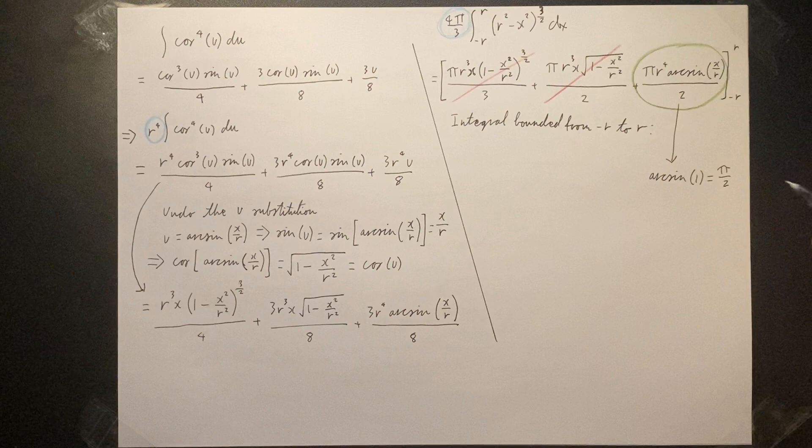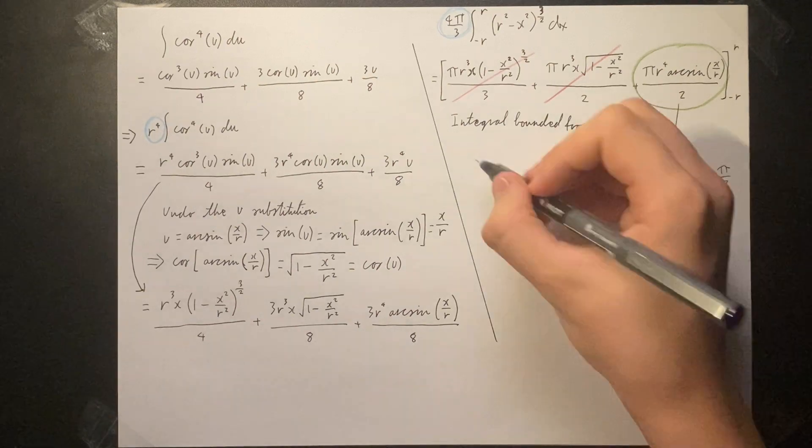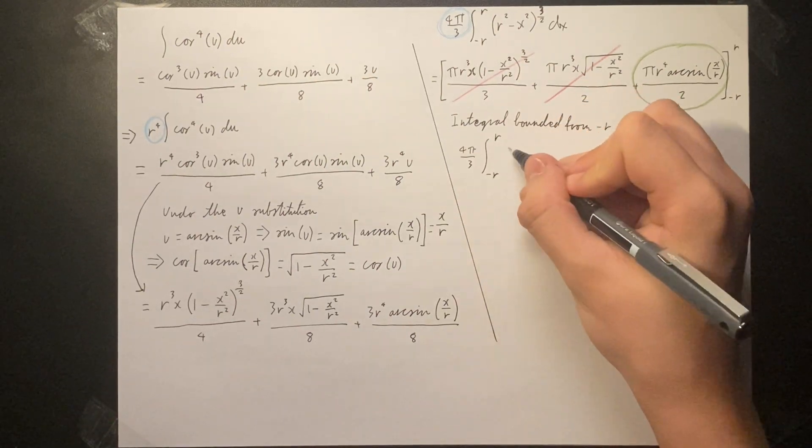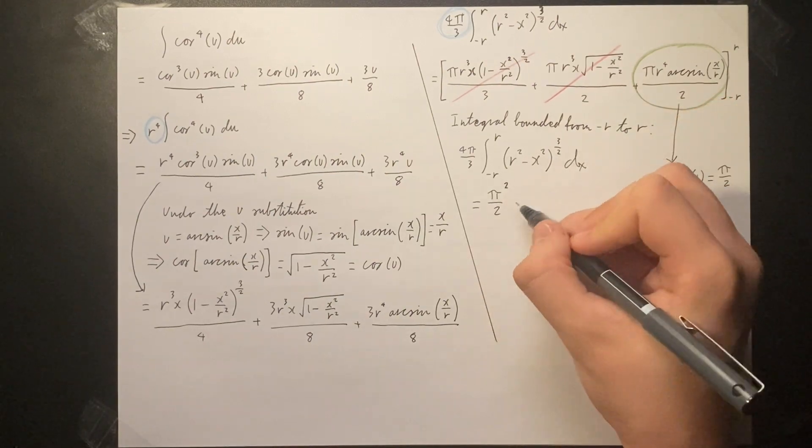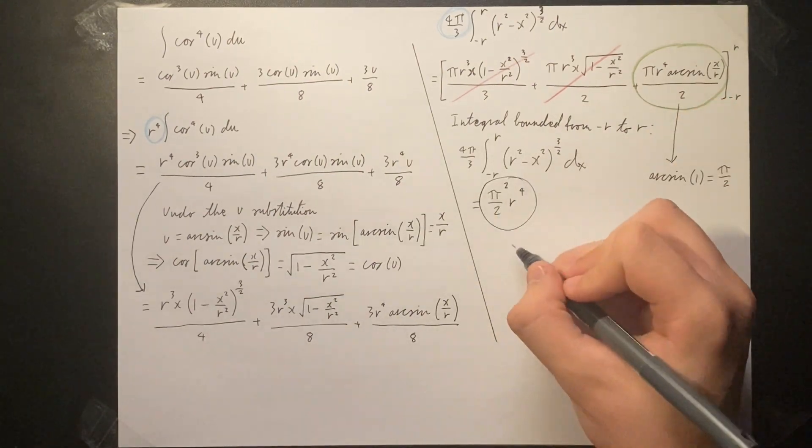For the negative r, we obtain negative pi over 2 for the arc sine of negative r over r. But because the lower bound is subtracted from the upper bound, the negatives cancel out. This leaves us with pi squared over 2 times r to the fourth. This is the four-dimensional volume of a four-dimensional sphere.